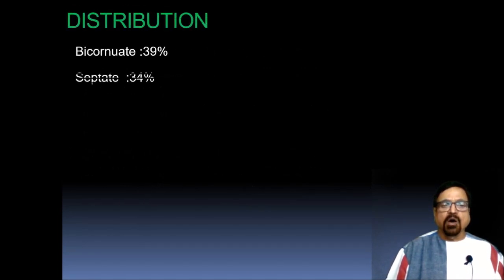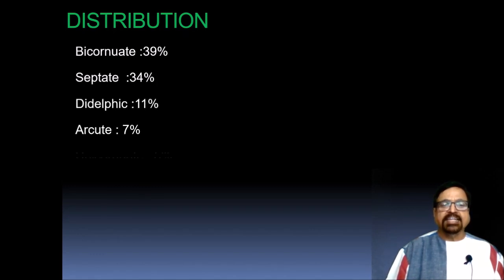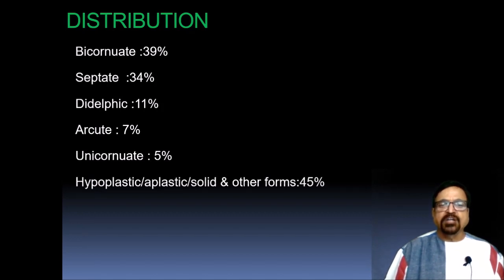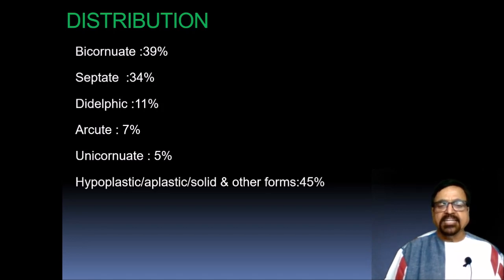Regarding the distribution of anomalies — the statistics we are giving are from our own study. In our region, bicornuate is at the top of the list at 39%, septate at 34%, didelphic at 11%, arcuate at 7%, unicornuate at 5%, and hypoplastic/aplastic or other forms make up 4-5% of the total distribution.